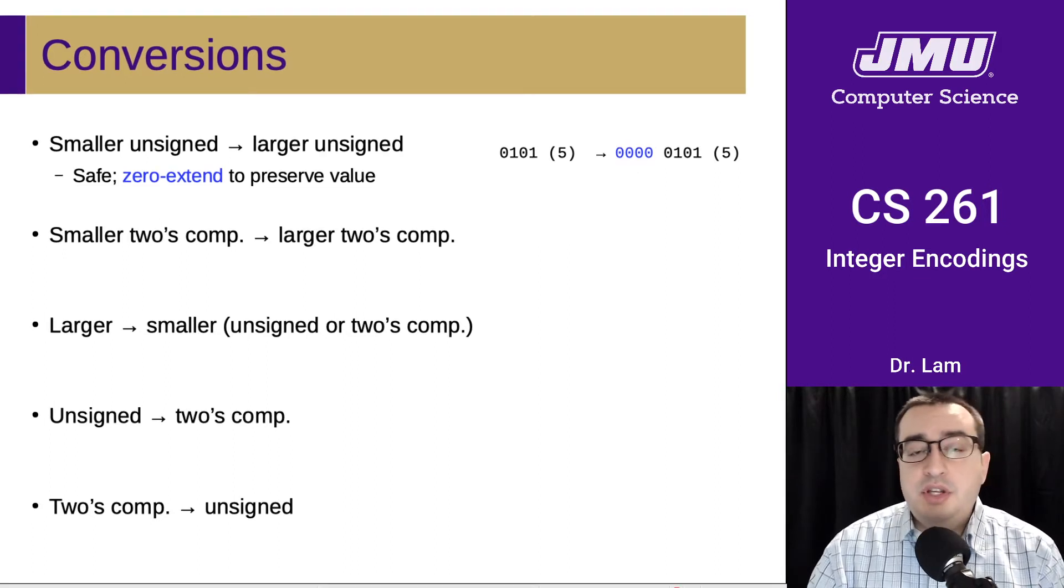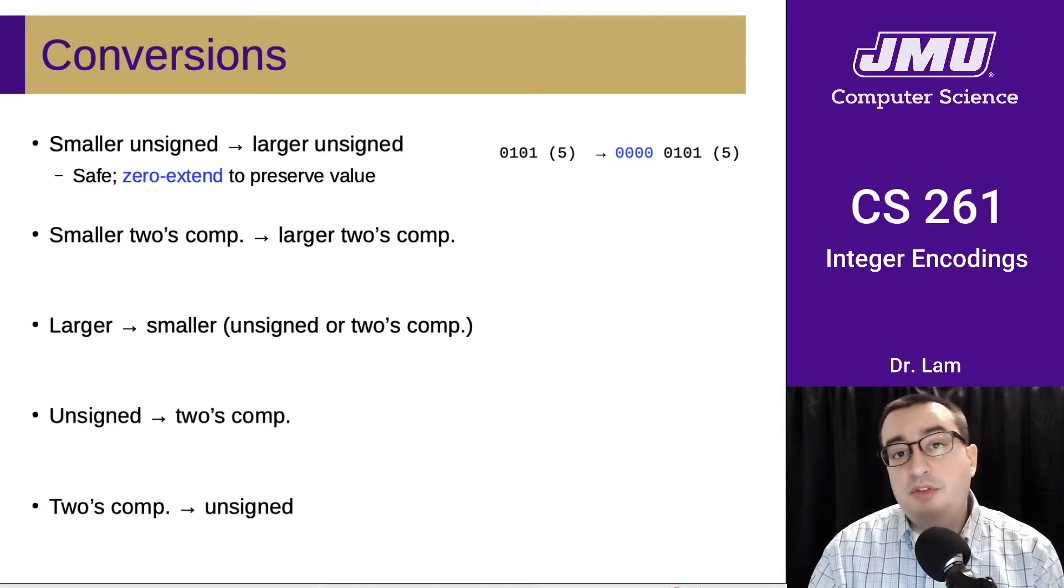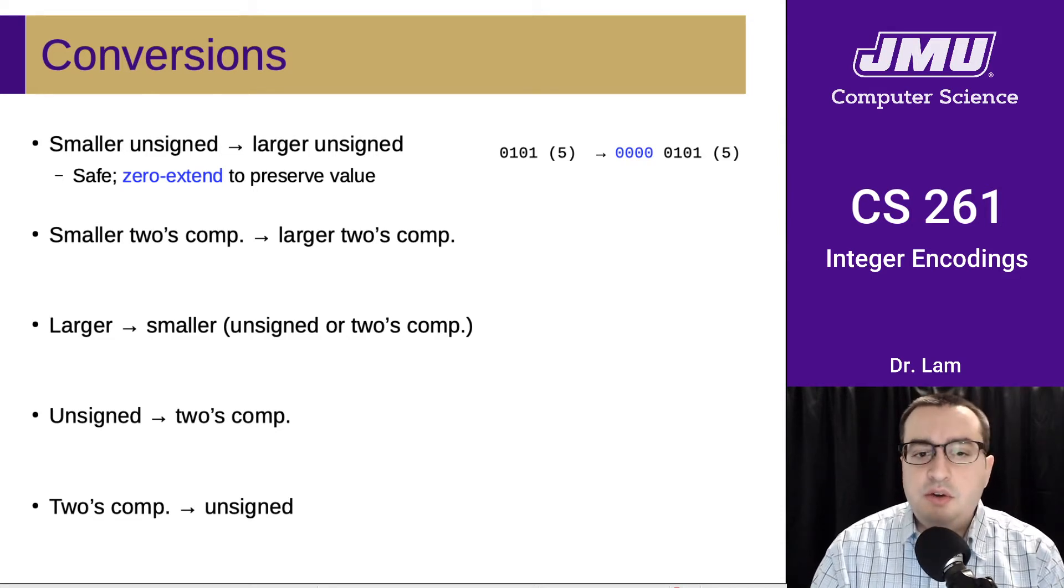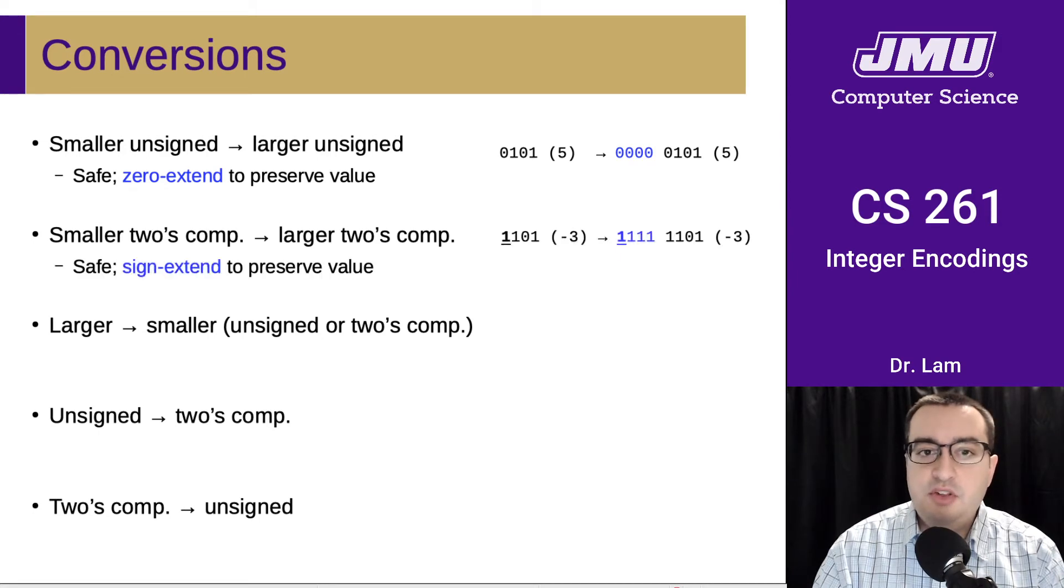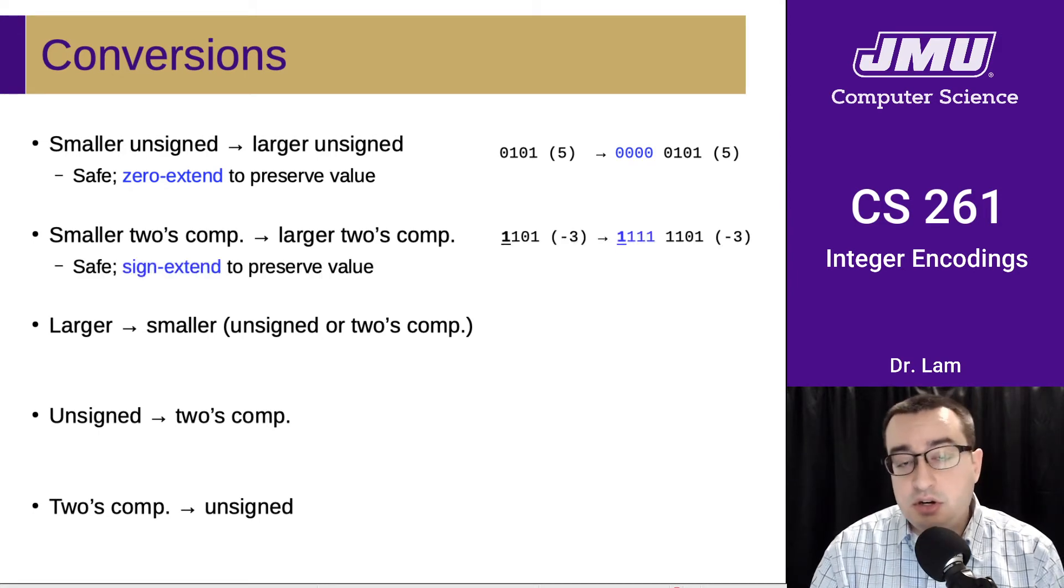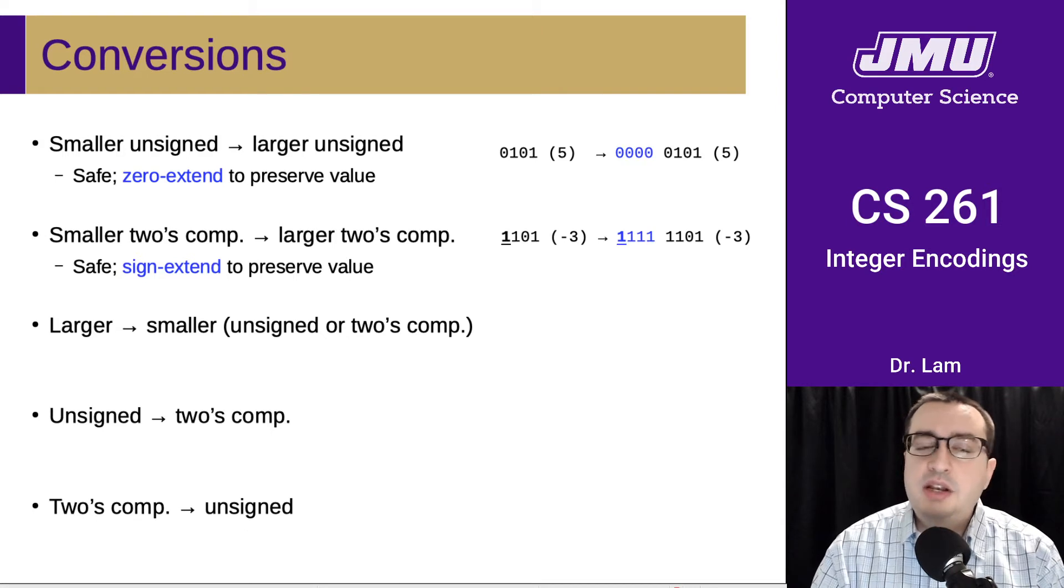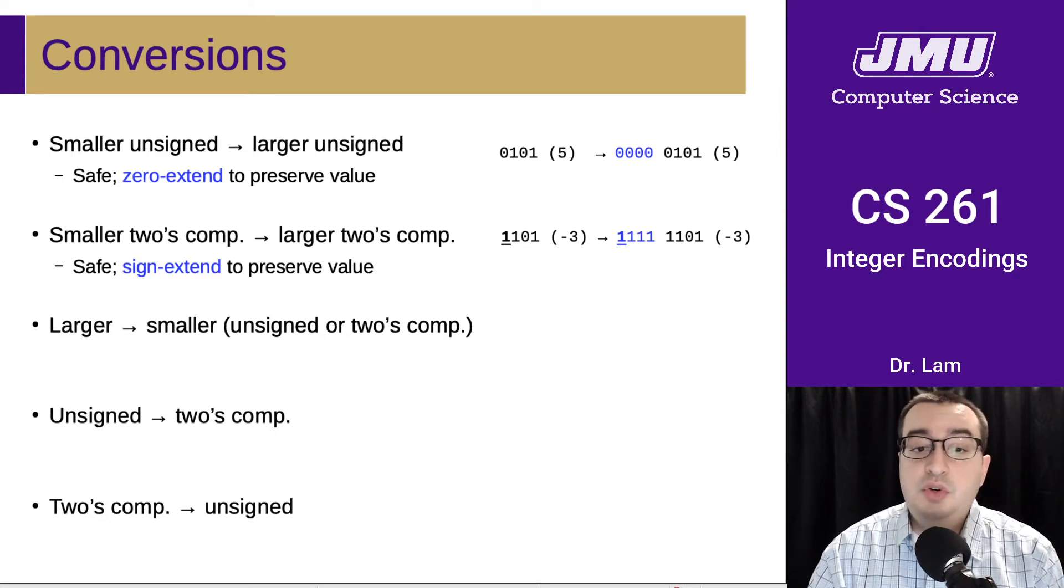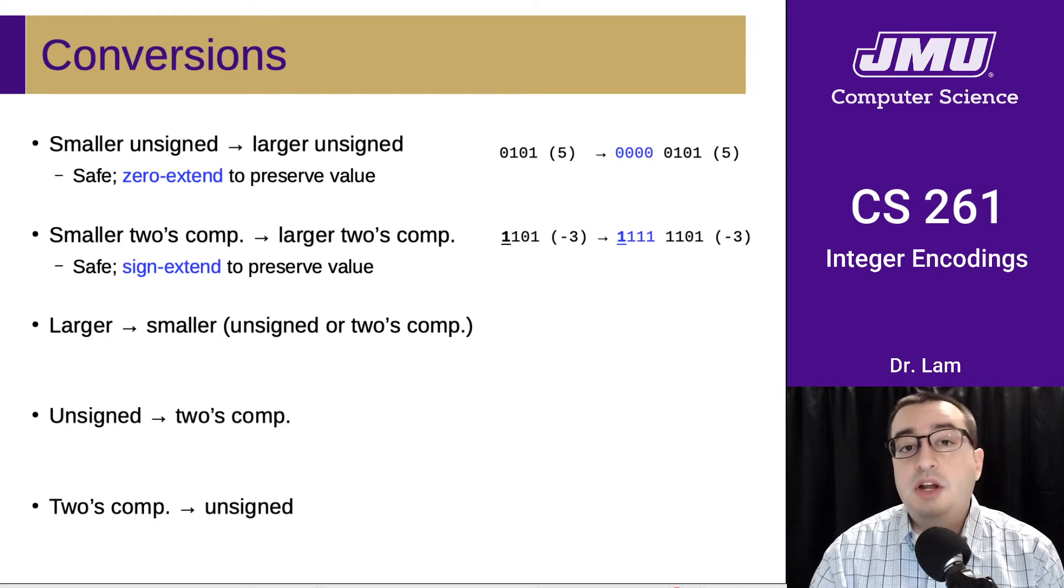So what about doing this in two's complement? Going from a smaller number to a larger number. And again, hopefully your intuition is that this is going to be okay. You can always represent a smaller number in a larger field, except that now if you're doing this with a signed format, in particular two's complement, you have to do what's called a sign extension, which is related to the difference between an arithmetic or a logical shift.